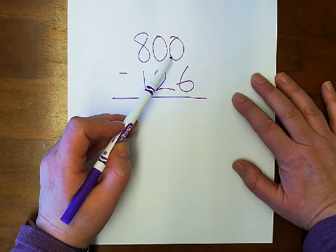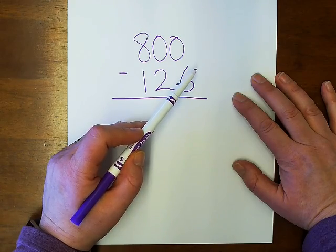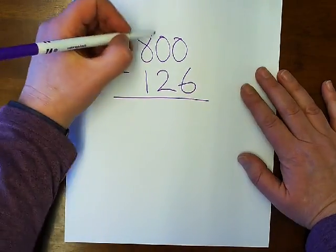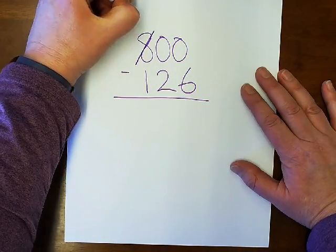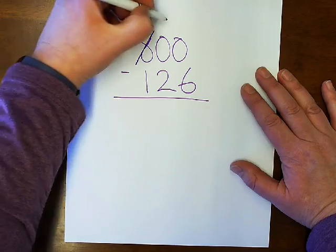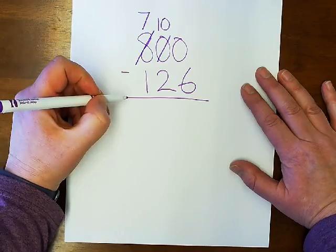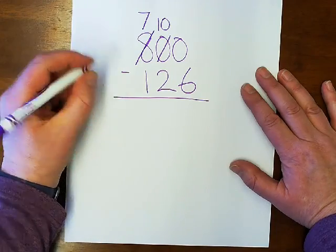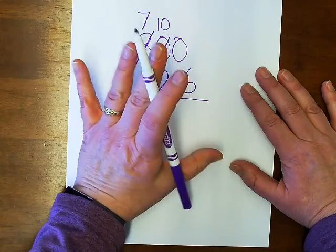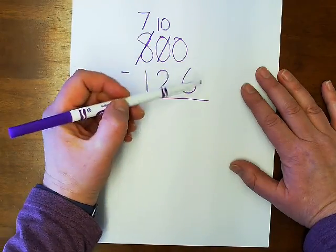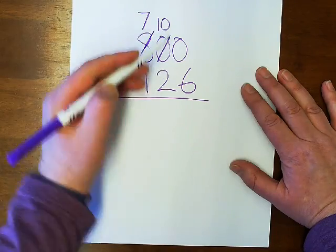Then there are seven hundreds and ten tens. I'm going to unbundle one hundred and make ten tens. So I have seven hundreds and ten tens. I'm still not ready to subtract because I have to unbundle one ten to make ten ones.